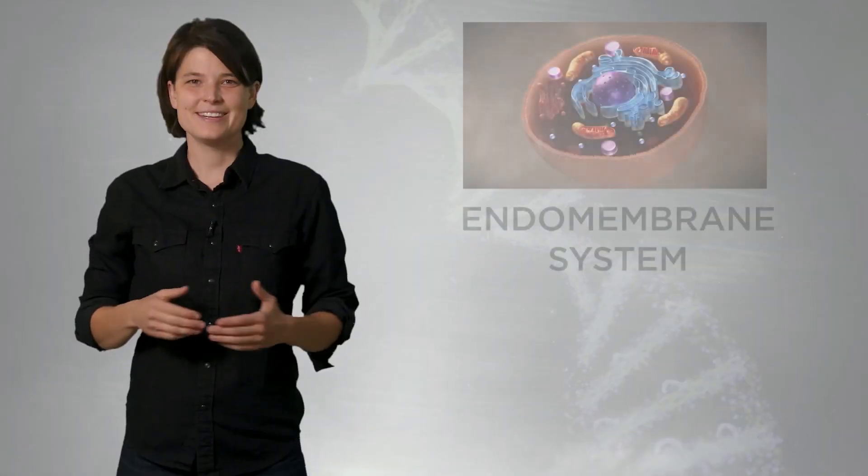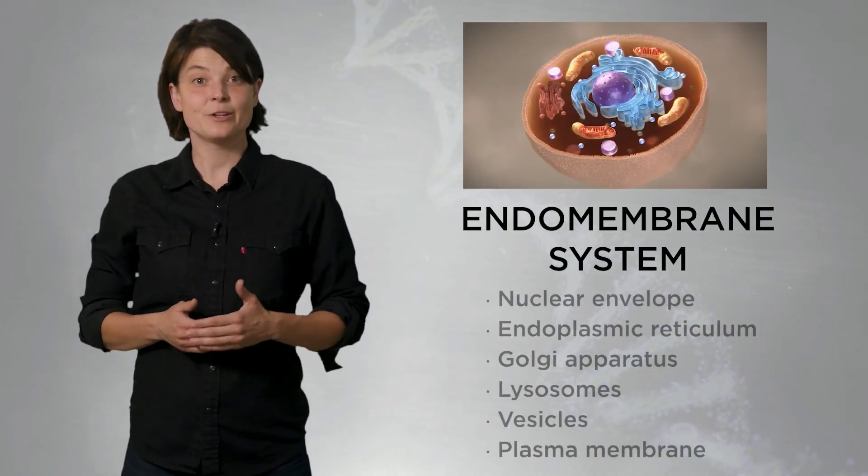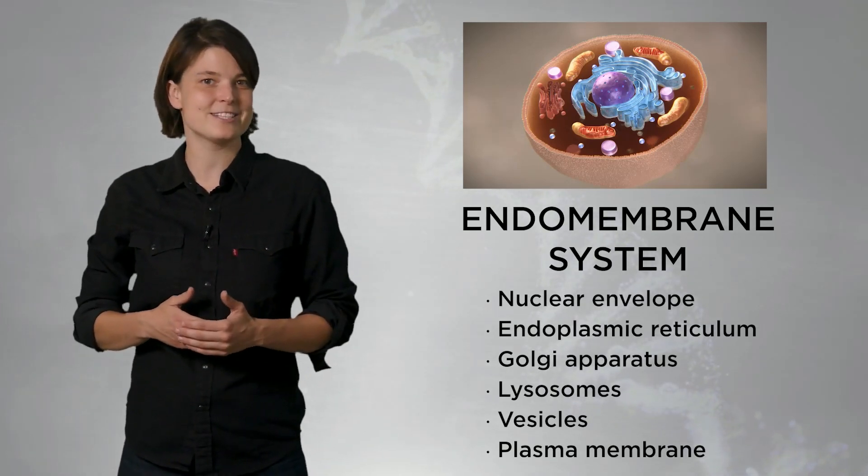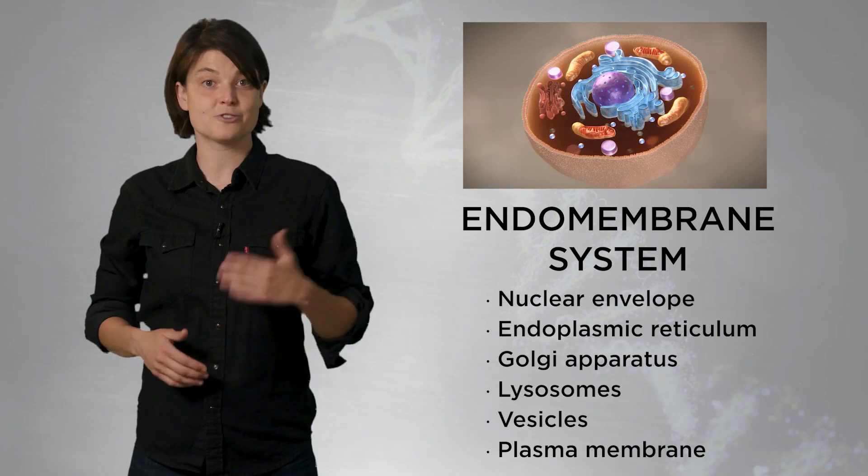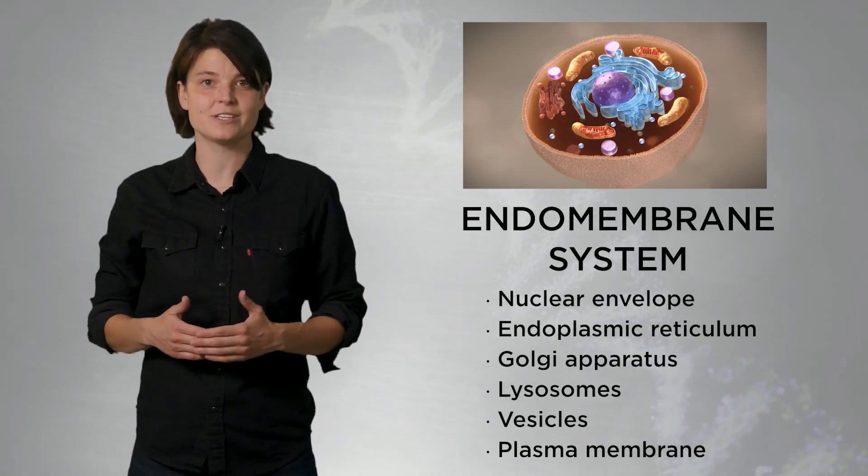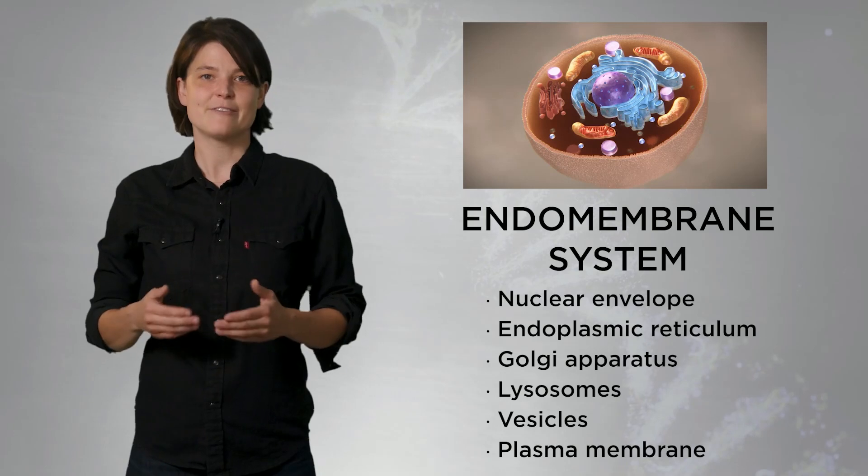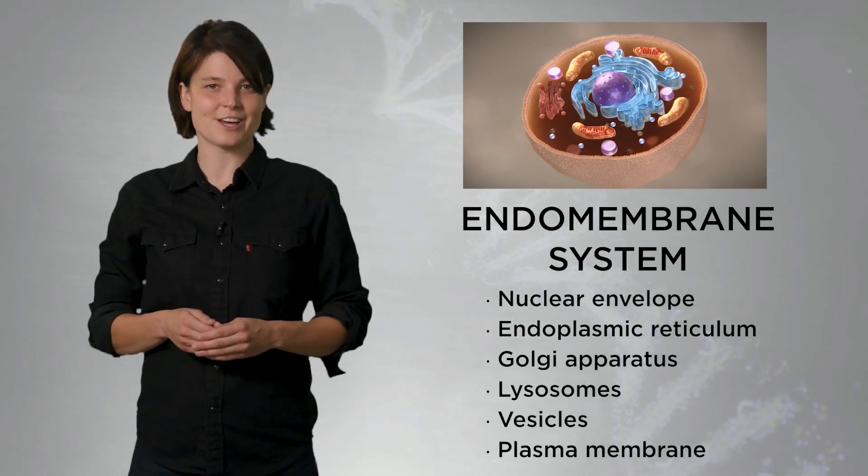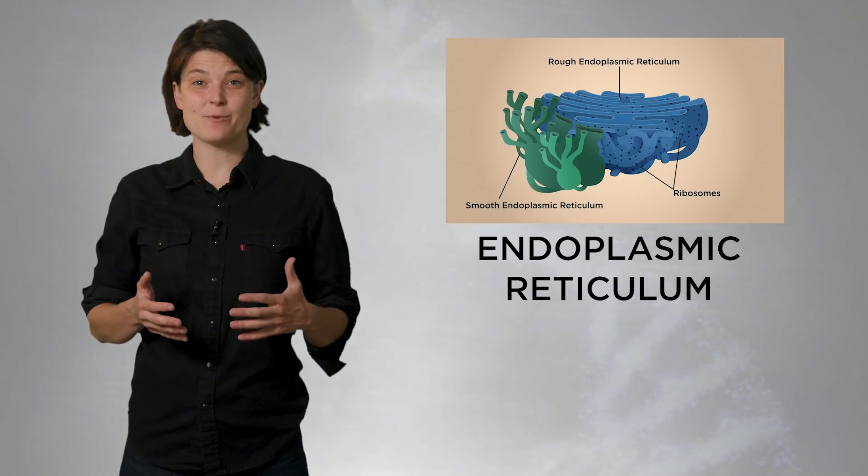This takes us to our next stop, the endomembrane system. The endomembrane system refers to several membrane-bound organelles, including the nuclear envelope, which we've already discussed, the endoplasmic reticulum and the Golgi apparatus, responsible for transportation and maturation of proteins, digestive organelles called lysosomes, vesicles, and finally the plasma membrane of the cell itself.